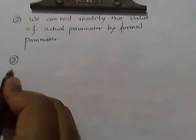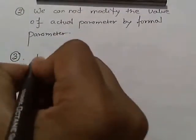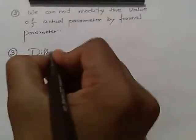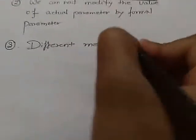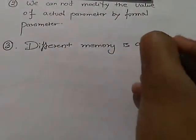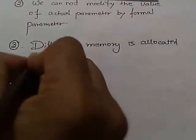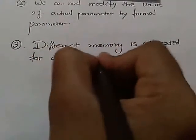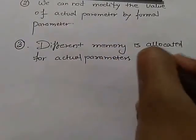In call by value, different memory is allocated for actual parameters and formal parameters.